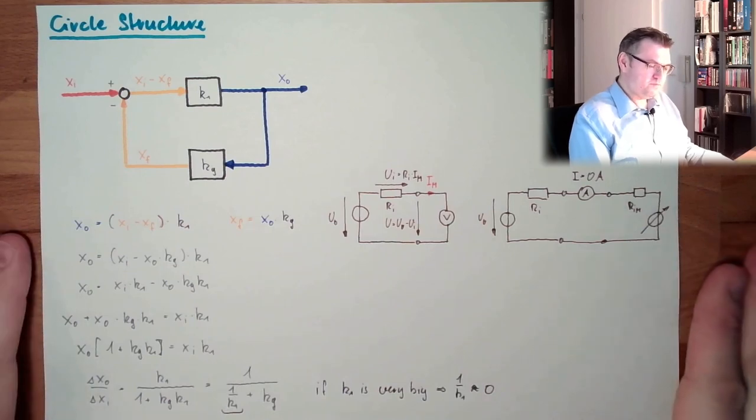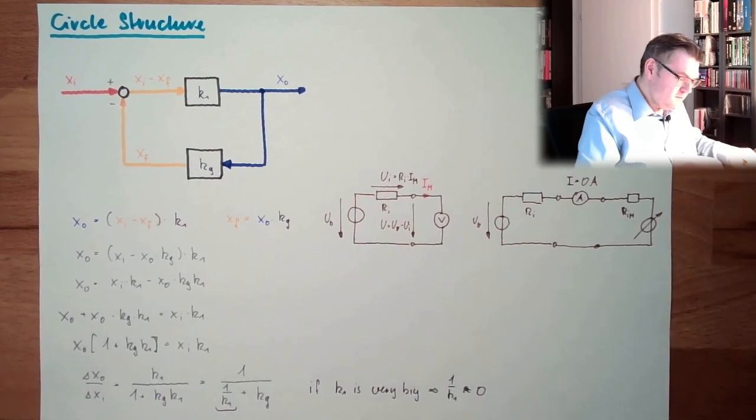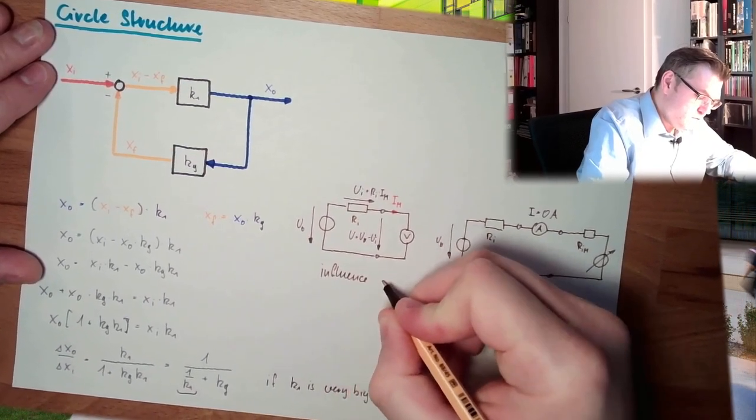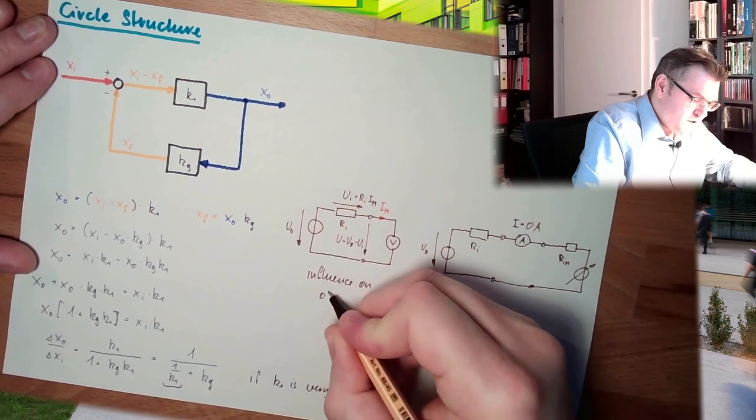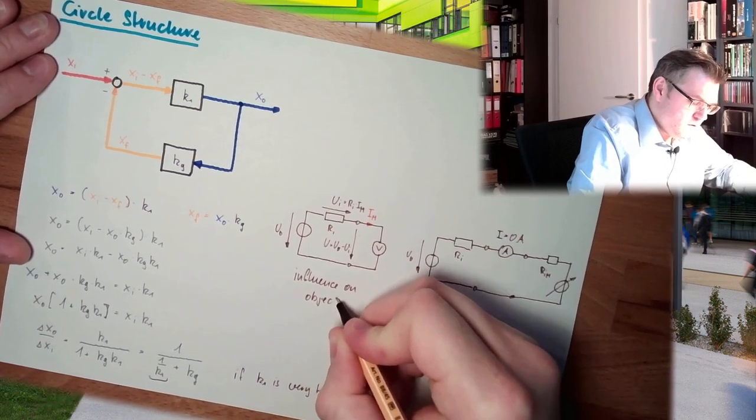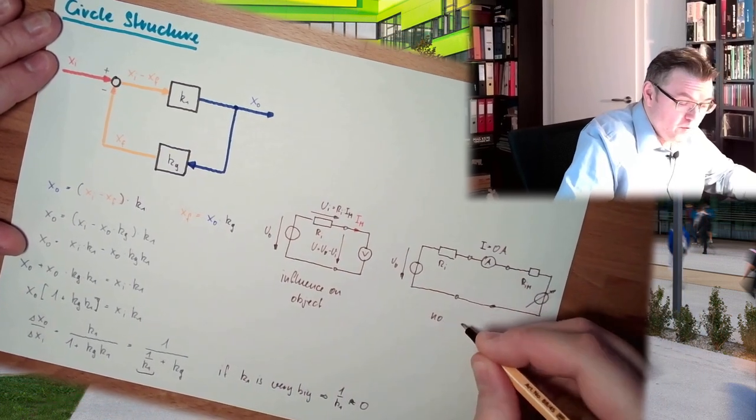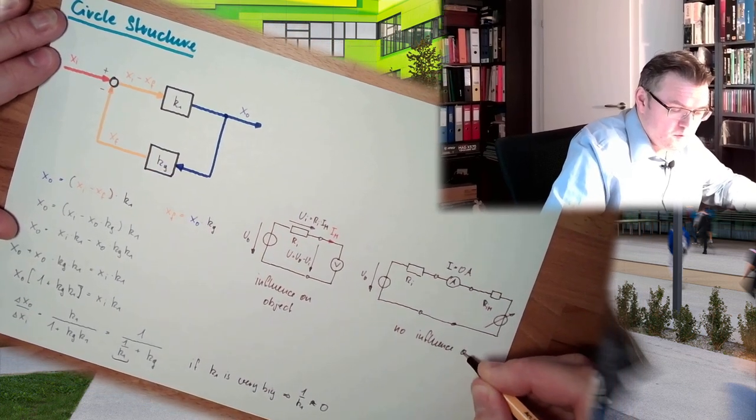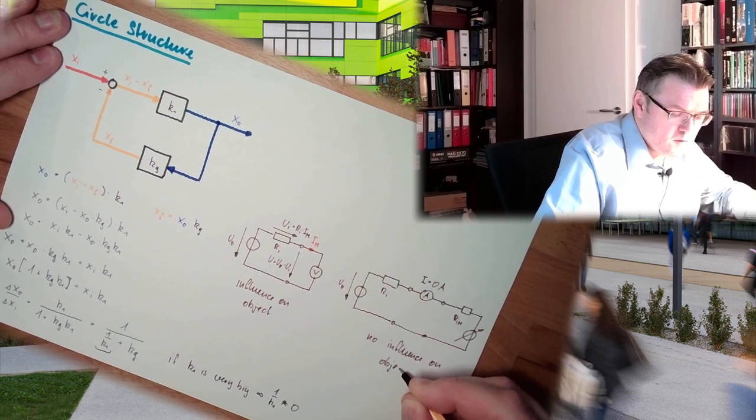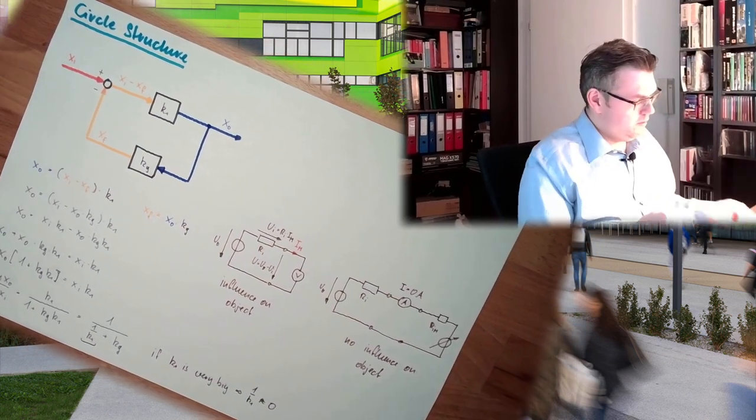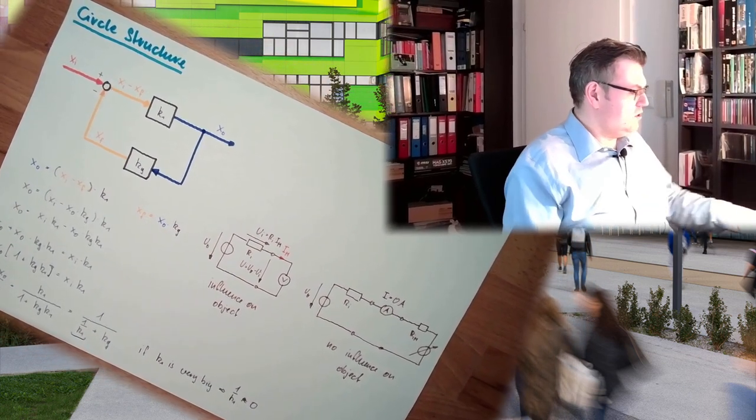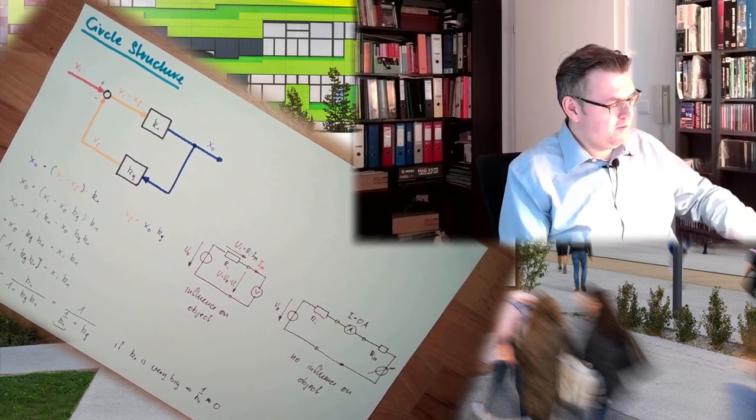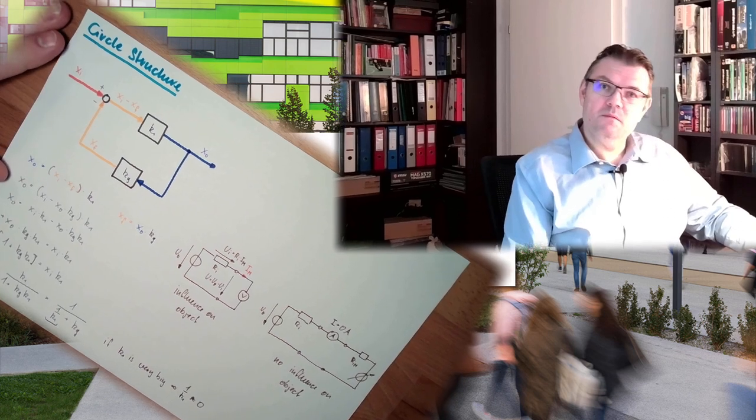So here we make influence on object. Here we have no influence on object. Circle structure, not always possible, but definitely good thing.